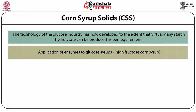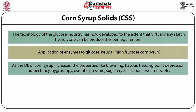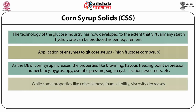The technology of the glucose industry has now developed so that virtually any starch hydrolysate can be employed as per requirement. The application of enzymes to glucose syrup was extended to include the conversion of dextrose to fructose by glucose isomerase, resulting in syrups known as high fructose corn syrup. As the dextrose equivalent of corn syrup increases, properties like browning, flavor, freezing point depression, humectancy, hygroscopy, osmotic pressure, sugar crystallization, and sweetness increase, while properties like cohesiveness, foam stability, and viscosity decrease. This gives a brief idea about which corn syrup to choose for a specific confection.